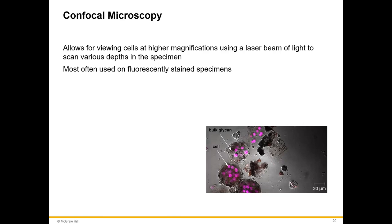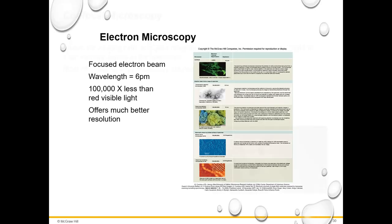Confocal microscopy uses a laser beam of light to scan various depths in the specimen. This allows us to see really great images at different depths. Electron microscopy uses a wave or beam of electrons in order to visualize organisms. Electron microscopy is necessary to visualize viruses and organisms that are smaller.